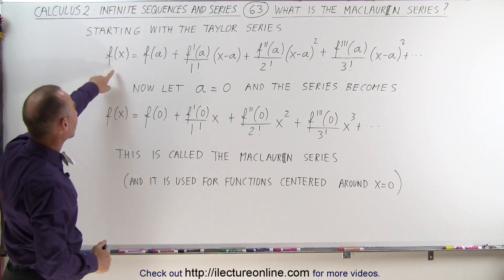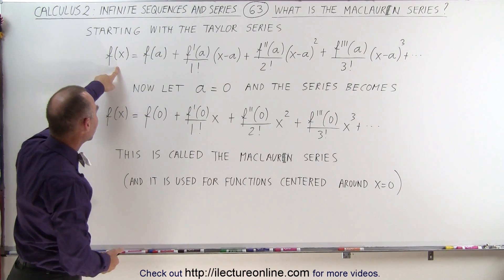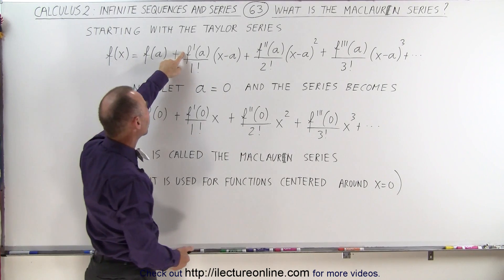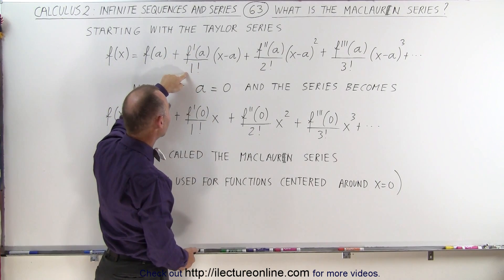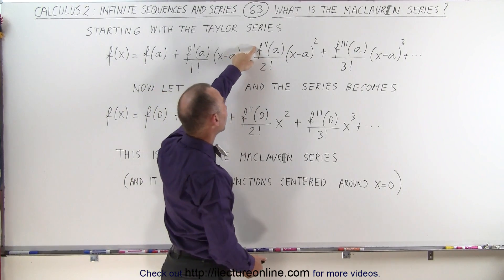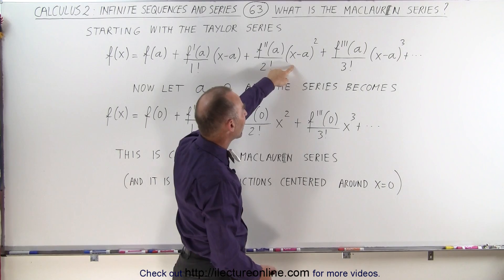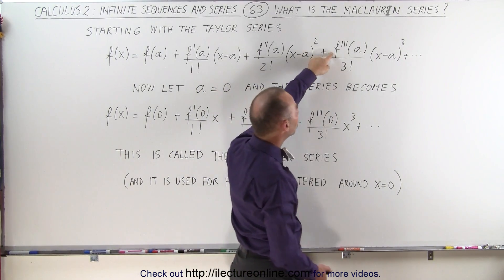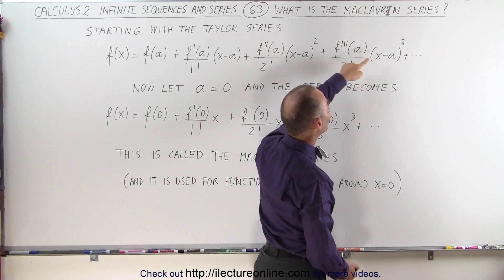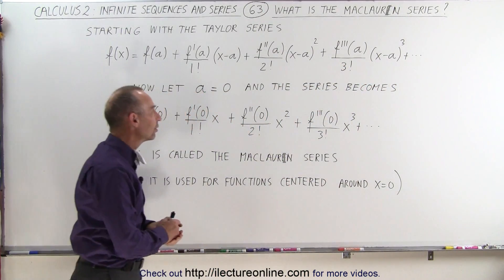We know now that the Taylor series has this form — it's the power series, where f of x equals the function evaluated at a, plus the derivative of the function evaluated at a, divided by 1 factorial, times x minus a, plus the second derivative of the function evaluated at a, divided by 2 factorial, times x minus a squared, plus the third derivative of the function evaluated at a, divided by 3 factorial, times the quantity x minus a cubed, and so forth, as you can see.